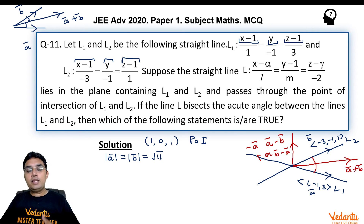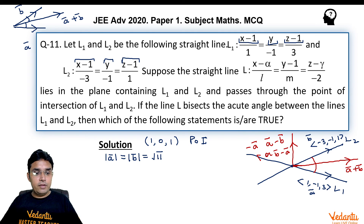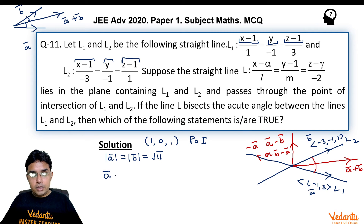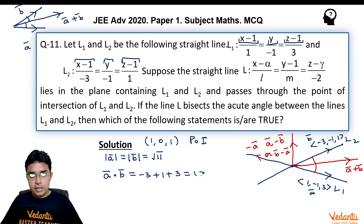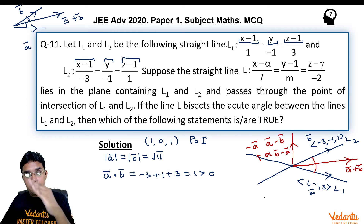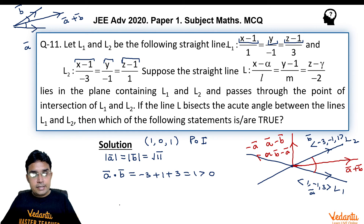To determine whether the angle between a and b is acute or obtuse, I take their dot product: a·b = (1)(−3) + (−1)(−1) + (3)(1) = −3 + 1 + 3 = 1, which is positive. Since the dot product is positive, the angle between a and b is acute, so a+b will give the direction along their acute angle bisector.